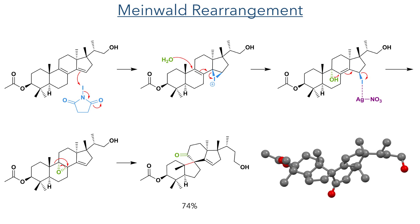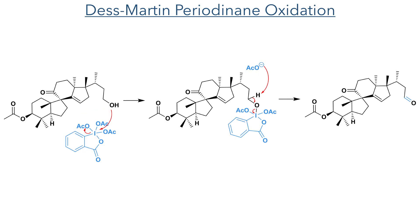The researchers could confirm the stereochemistry of this product using X-ray crystallography. In the next step, they used Dess-Martin periodinane to oxidise the hydroxyl group. This attacks the iodine centre, displacing an acetate, which then acts as a base to deprotonate the now activated carbon centre, forming the carbon-oxygen double bond together with the elimination of the DMP by-product.